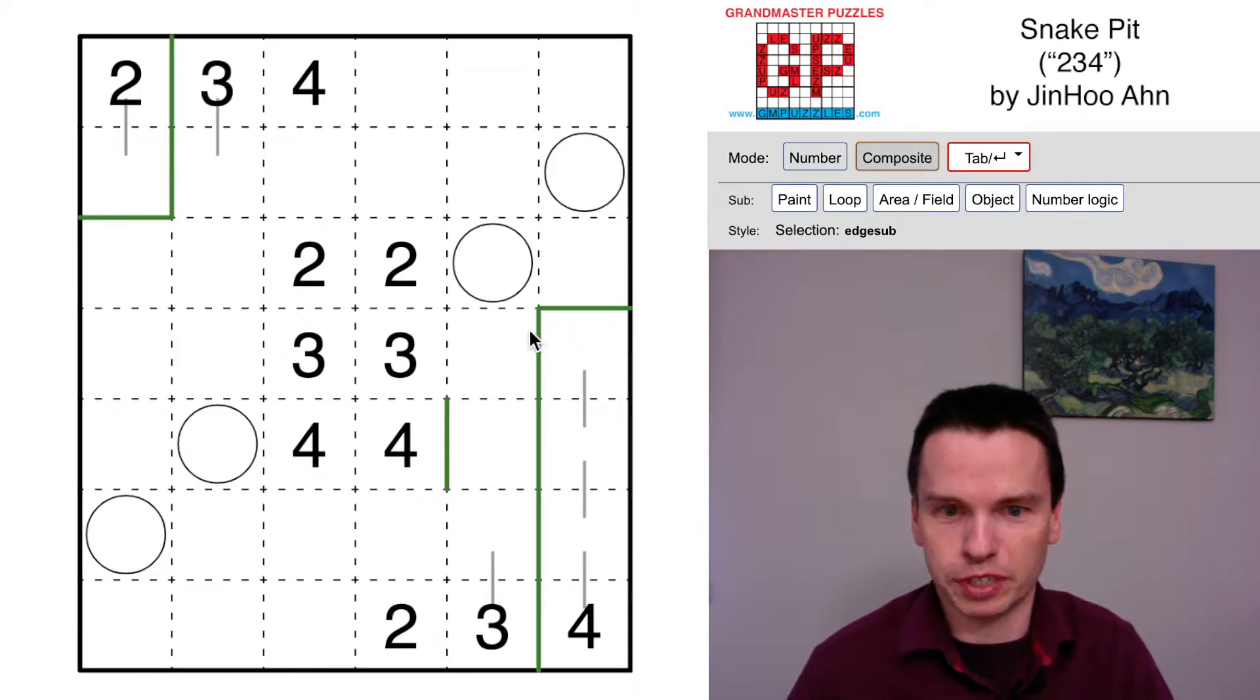But one thing that's new for snake pit is the constraint across these three groups. What we can't have in a grid like this is a one unit hidden volumino, and that's a divergence from volumino logic.